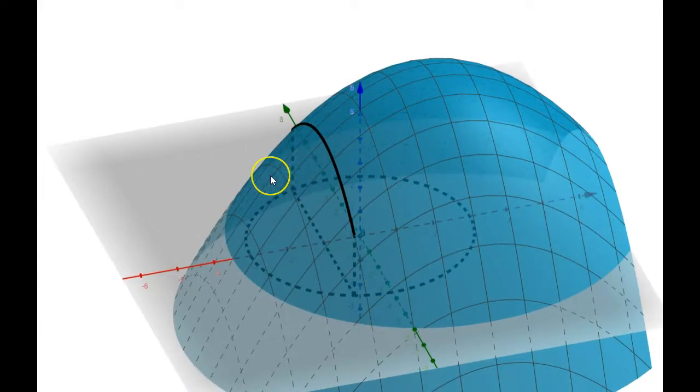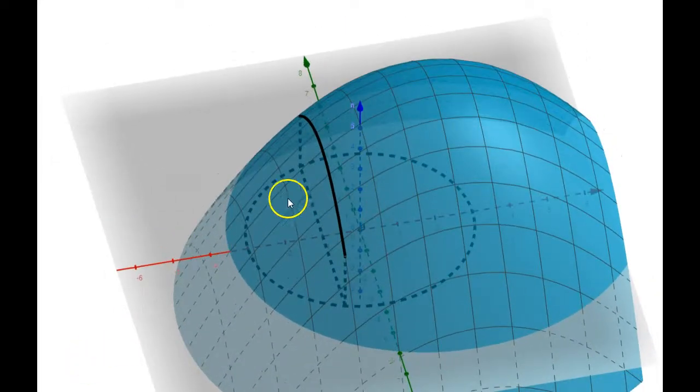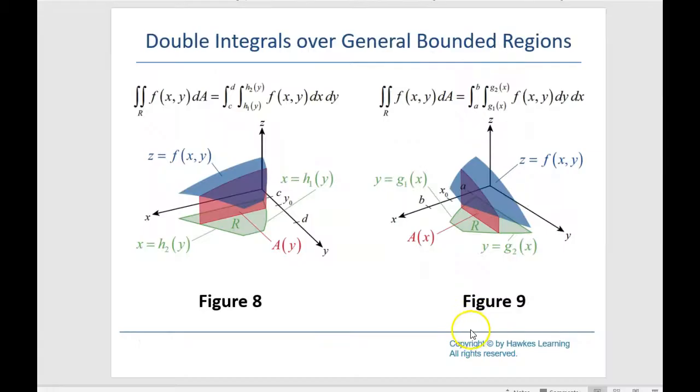And that's the way we'll have to handle these generic regions when it's not a rectangle, when the value of Y or X—it could be the other way around—but when the value of one variable in the limits of integration, how far I'm going up or down in this case, is dependent upon where I am horizontally. So the limits of integration—this is something we've never seen before—the limits of integration are a function of another variable. How far down I go, how far up I go depends on where I am in the outer integral.